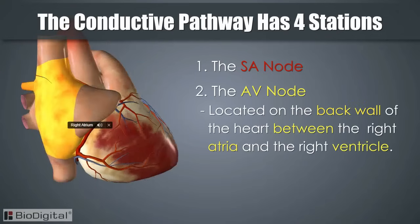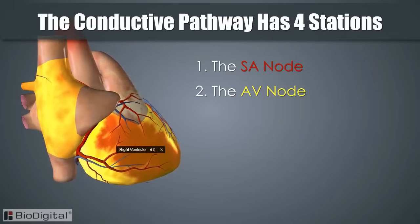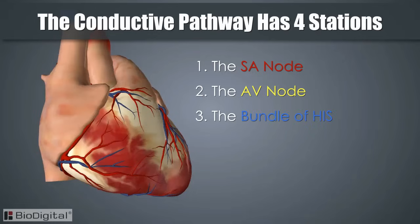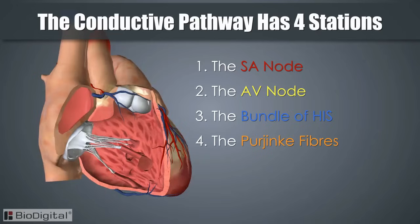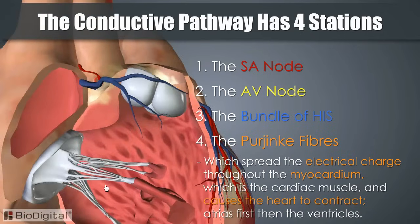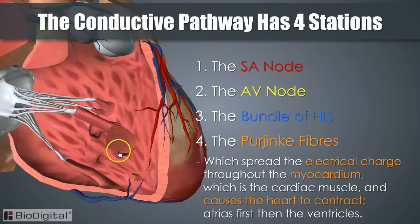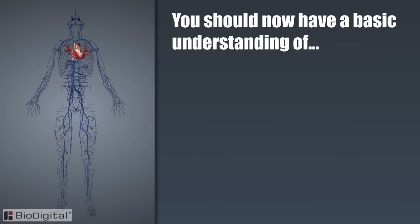The AV node is located on the back wall of the heart between the right atria and the right ventricle. The spark is then passed to the bundle of His, located in the heart's septum, and lastly to the Purkinje fibers, which spread the electrical charge throughout the myocardium — the cardiac muscle — causing the heart to contract, atria first and then the ventricles.